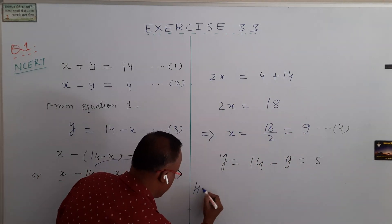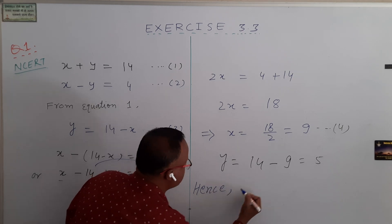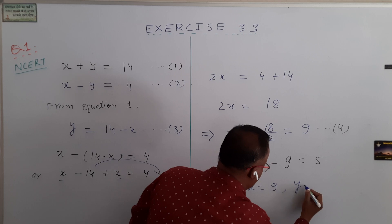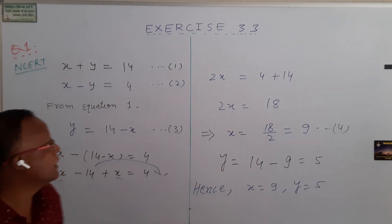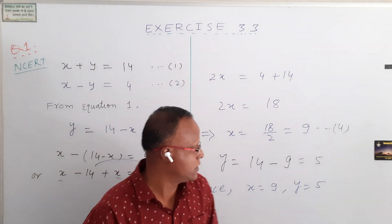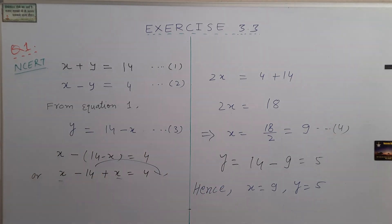Hence, we can say, x is equal to 9 comma y is equal to 5. This is our answer. So the solution of the given equations are x equal to 9 and y equal to 5.